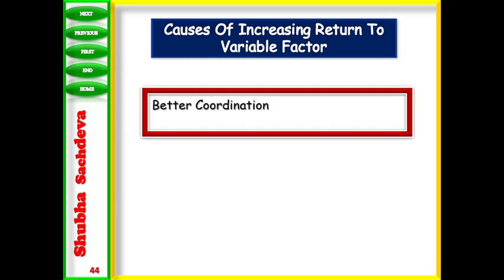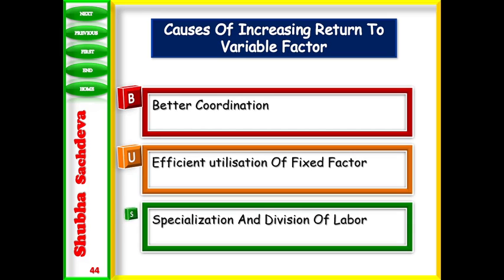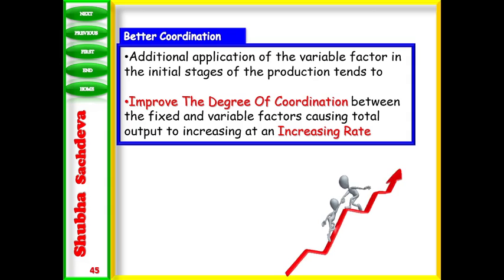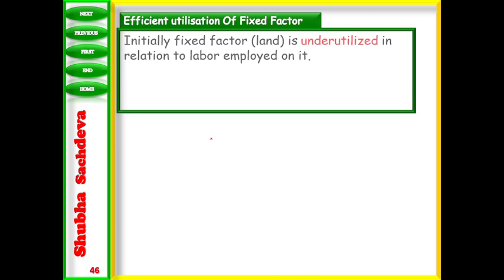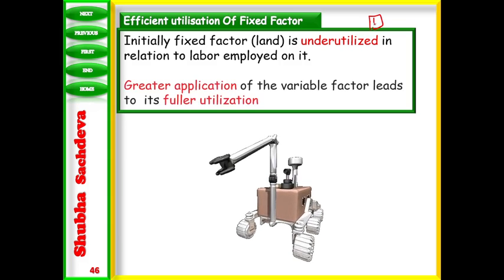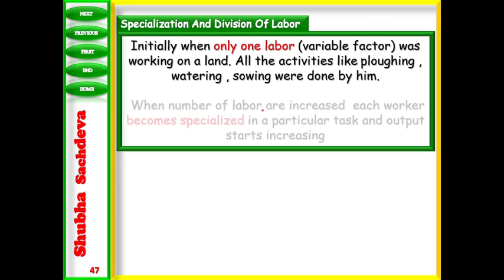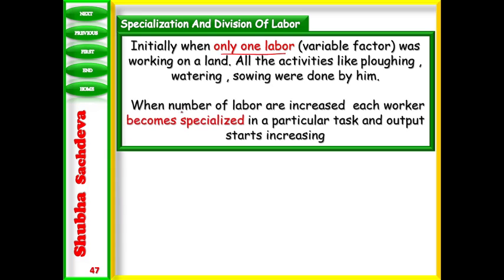Now we study the causes of increasing returns to a variable factor. First, better coordination — when there is good coordination between the fixed factor and variable factor, output increases at an increasing rate. Second, efficient utilization of the fixed factor — initially the fixed factor is underutilized; as we add more labor, fuller utilization begins, giving increasing returns. Third, specialization and division of labor — as the number of workers increases, each becomes specialized in their part, division of labor occurs, and output increases at a good rate.